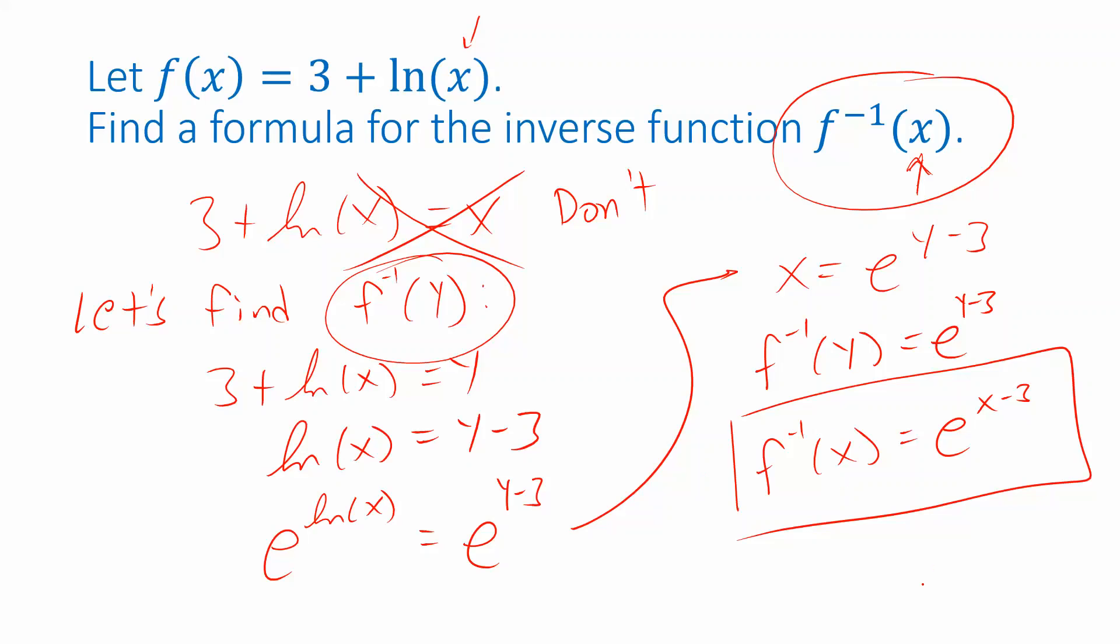Now why would you ever want to do this? Why would you want to write both f and f inverse with the same symbol representing their inputs? Well that might be so that you could graph those two functions on the same xy plane, so you'd need both of them to have the same input variable in order to graph them both on the same coordinate axes.